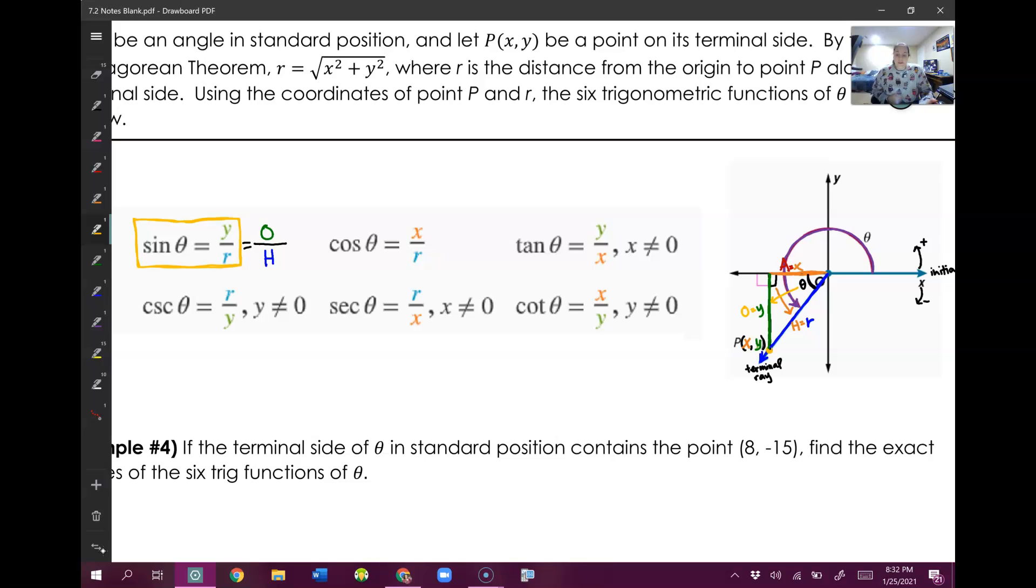Now we can do the same thing with cosine. So CAH TOA, so cosine is adjacent over hypotenuse. Well, my adjacent side is X, and my hypotenuse side is R. So that's where they got this X over R from. So now cosine is not only adjacent over hypotenuse, it is the X value over the R value.